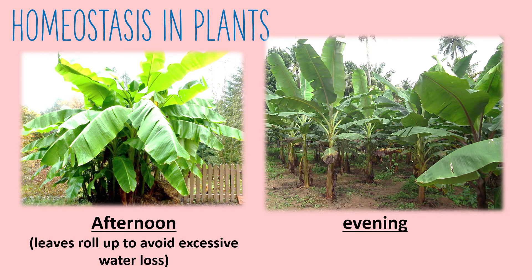Observe the plant condition during different times in a day, just like this banana plant. Plants need sufficient water to prevent them from withering and dying. How do plants regulate water content during hot and cold days? Homeostasis helps plants to regulate their water content when the surroundings or the weather changes, and allows plant cells to store sufficient water. This could help the plants to prevent withering or death during droughts.